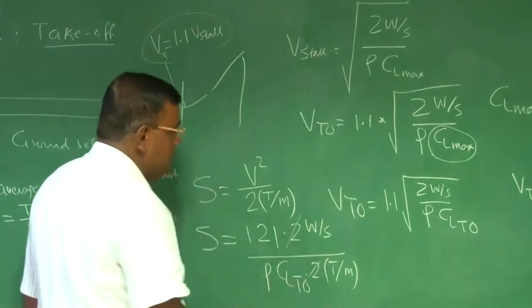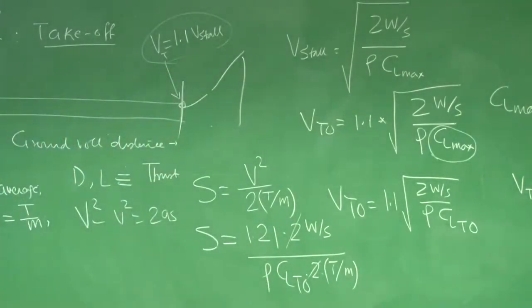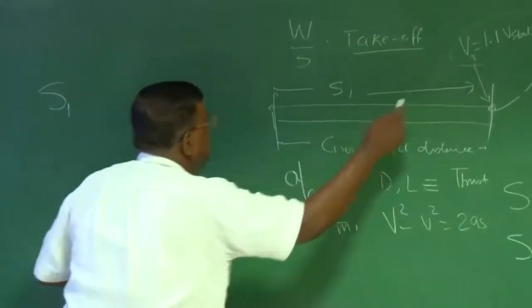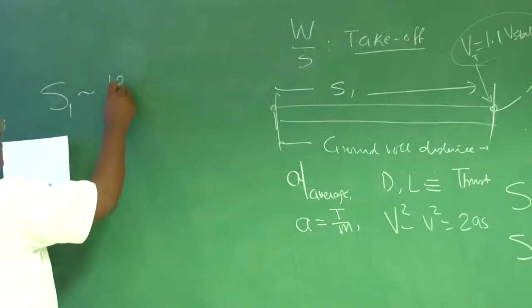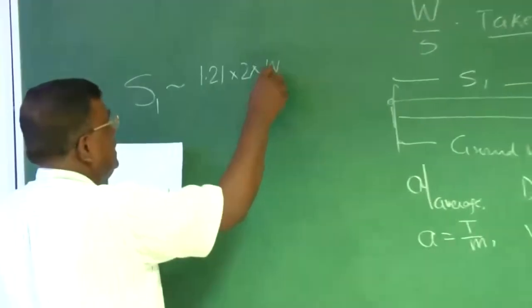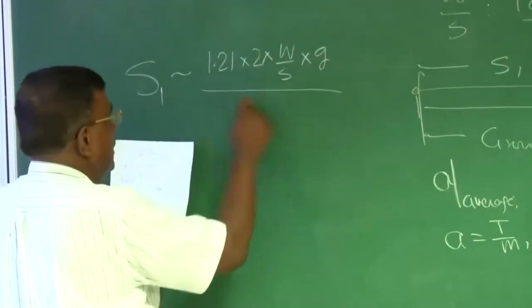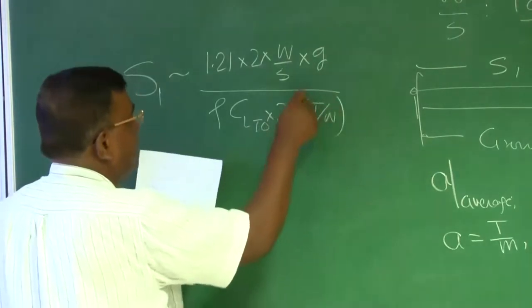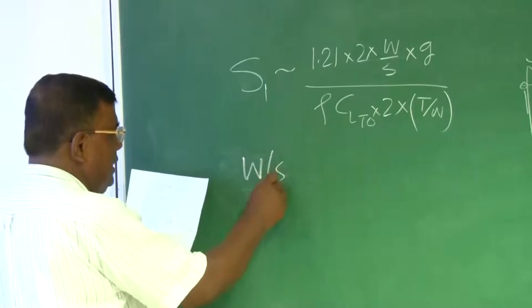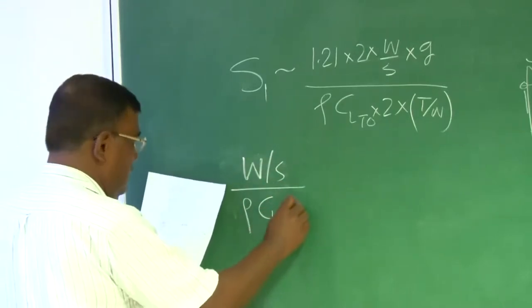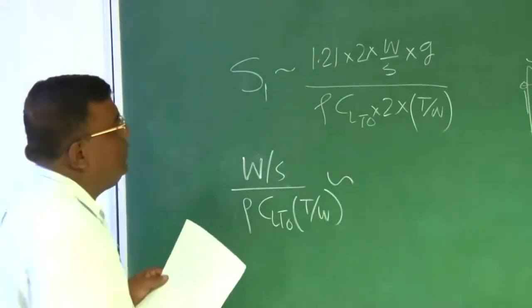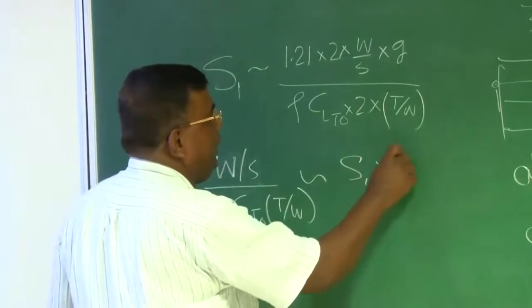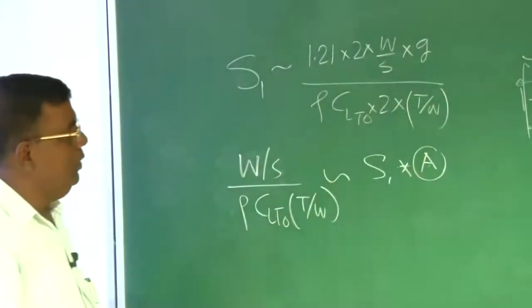This 2 and this 2 get cancelled. So I am left with s₁, which I am telling this distance: s₁ = 1.21 × 2 × (W/S) × g / (ρC_L_takeoff × 2 × T/W). Watch out for the parameter W/S. This will be proportional to (W/S) / (C_L_takeoff × T/W) and ρ proportional to s₁ into some factor. Important thing is, if I plot the ground roll distance and this parameter, they will form a straight line.